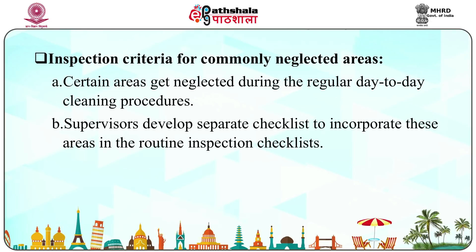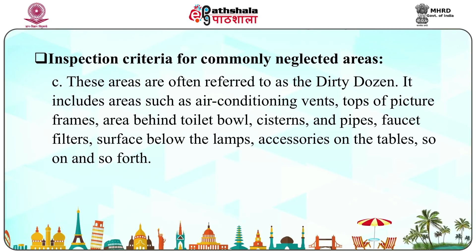Next is inspection criteria for commonly neglected areas. Certain areas get neglected during regular day-to-day cleaning operations. Supervisors develop a separate checklist to incorporate these neglected areas in the routine inspection checklist. These areas are often referred to as the dirty dozen. They include areas such as air conditioning vents, tops of picture frames, area behind the toilet bowl, cisterns and pipes, faucet filters, surfaces below the lamps, accessories on the tables, and so on.